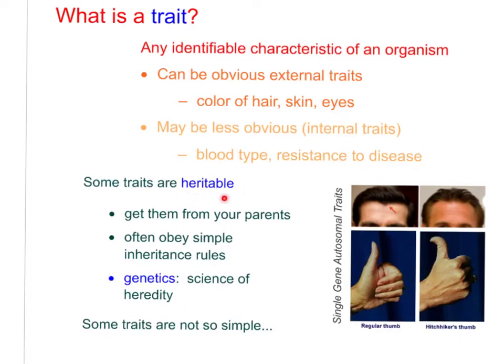Heritable traits are the ones that you get from your parents — the ones you inherited. They often obey very simple inheritance rules, but sometimes they do not; sometimes they're more complicated. Genetics is the science of heredity.